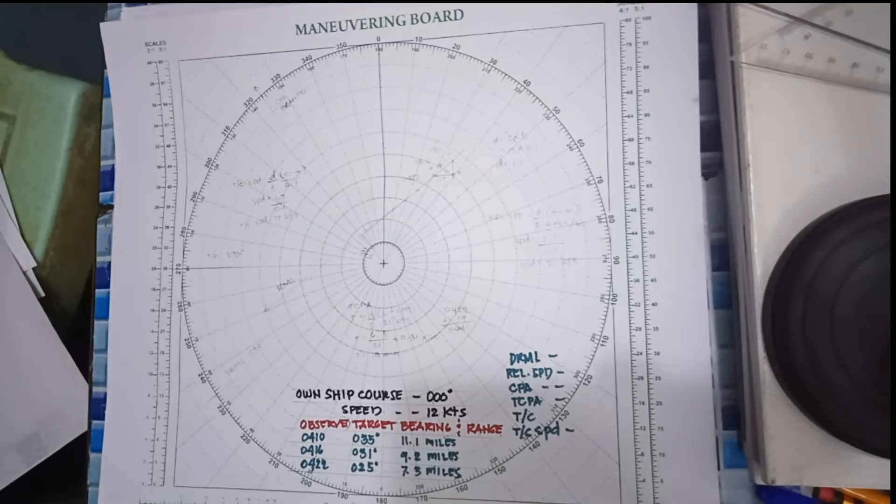Good day to everyone. The topic I'd like to share is about manual radar plotting. We have to plot in the maneuvering board in order to get the DRML or the direction of the relative motion line, the relative speed, the CPA or the closest point of approach, TCPA or the time to closest point of approach, the true course and the true speed.